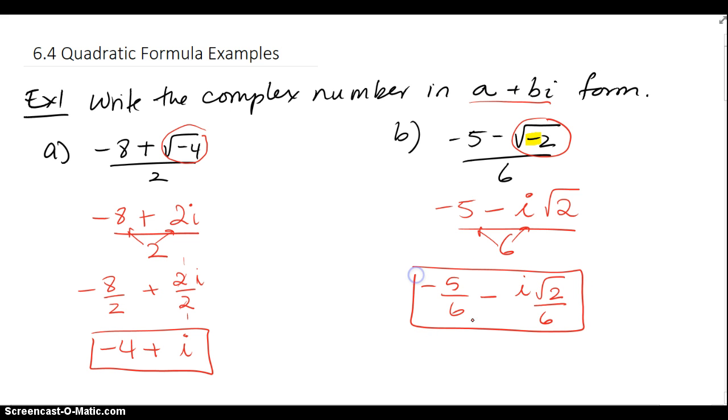So this is an acceptable answer, or if you want to put the i at the end, negative 5 over 6 minus root 2 over 6, and we can't reduce this any further because the 2 has a radical but the 6 doesn't. You can put the i at the end if you want, so they're both acceptable answers.